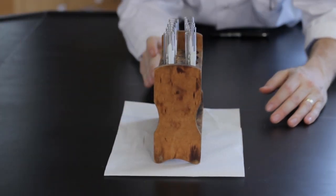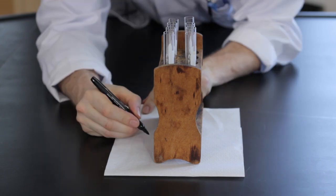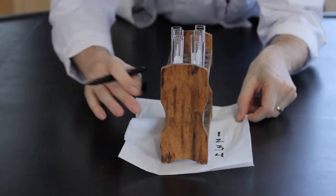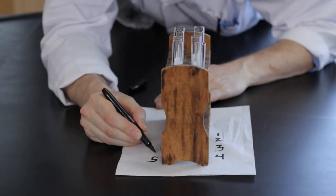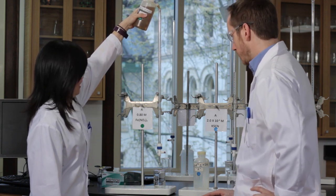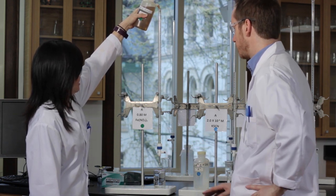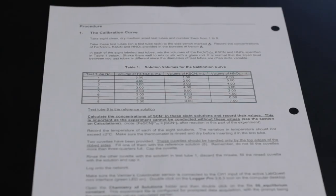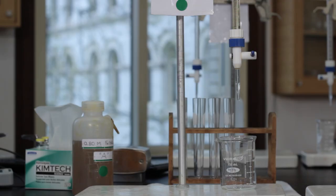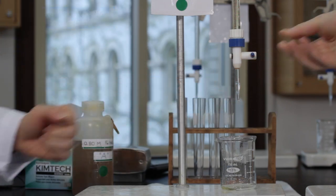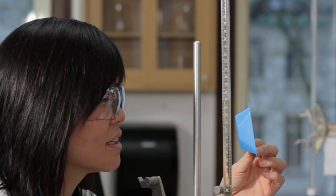Take eight clean dry medium-sized test tubes and number them from one to eight. Take the test tubes to the bench marked A and record the concentrations of the solutions provided in the burettes. In each of the eight test tubes, measure out the volumes of the solutions as specified in table one. Remember to read the meniscus at eye level.